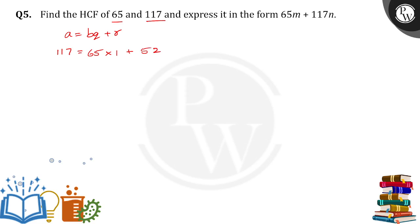Next one: 65 is equal to 52 into 1 plus 13. Now 52 is equal to 13 into 4 plus 0. So we got the HCF of these two numbers. HCF of 65 and 117 is 13. This is the HCF.